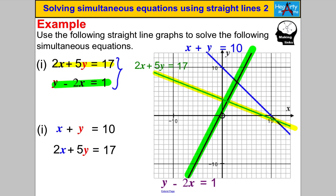The equation y − 2x = 1 is this purple line here. Where they intersect is the solution to the simultaneous equations. Each square on both axes is one unit. They intersect at x = 1 and y = 3. Let's double-check: 2×1 = 2, 5×3 = 15, and 2 + 15 = 17 ✓. Then 3 − 2×1 = 3 − 2 = 1 ✓.